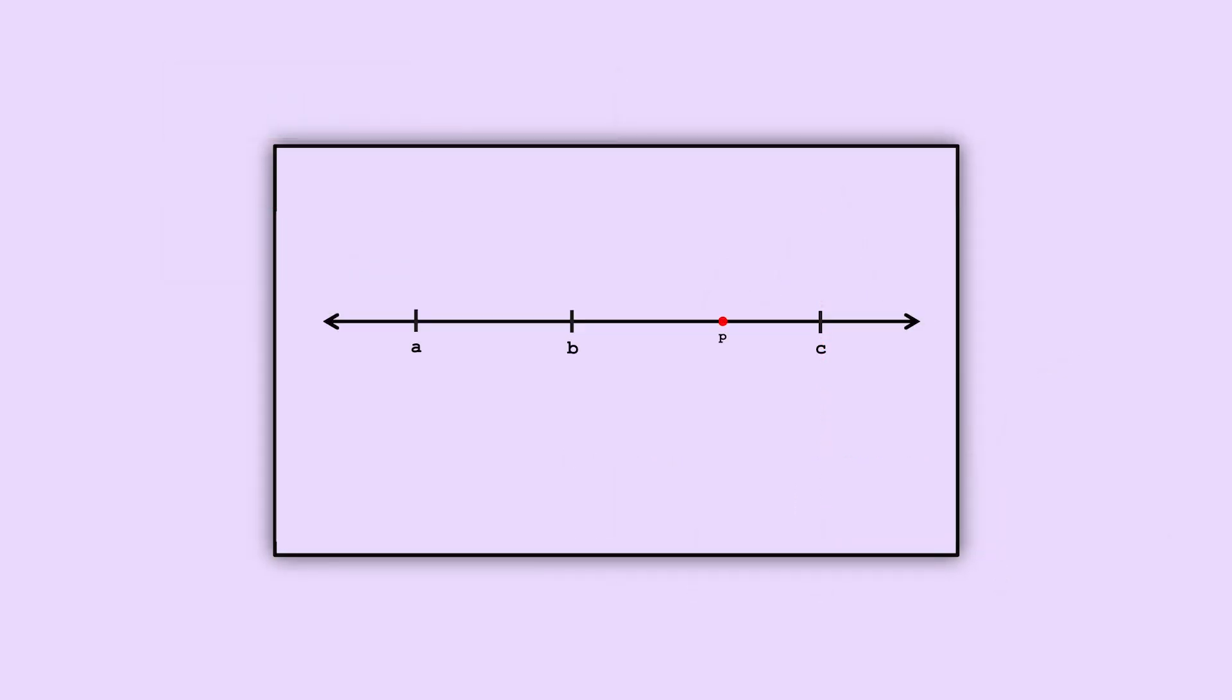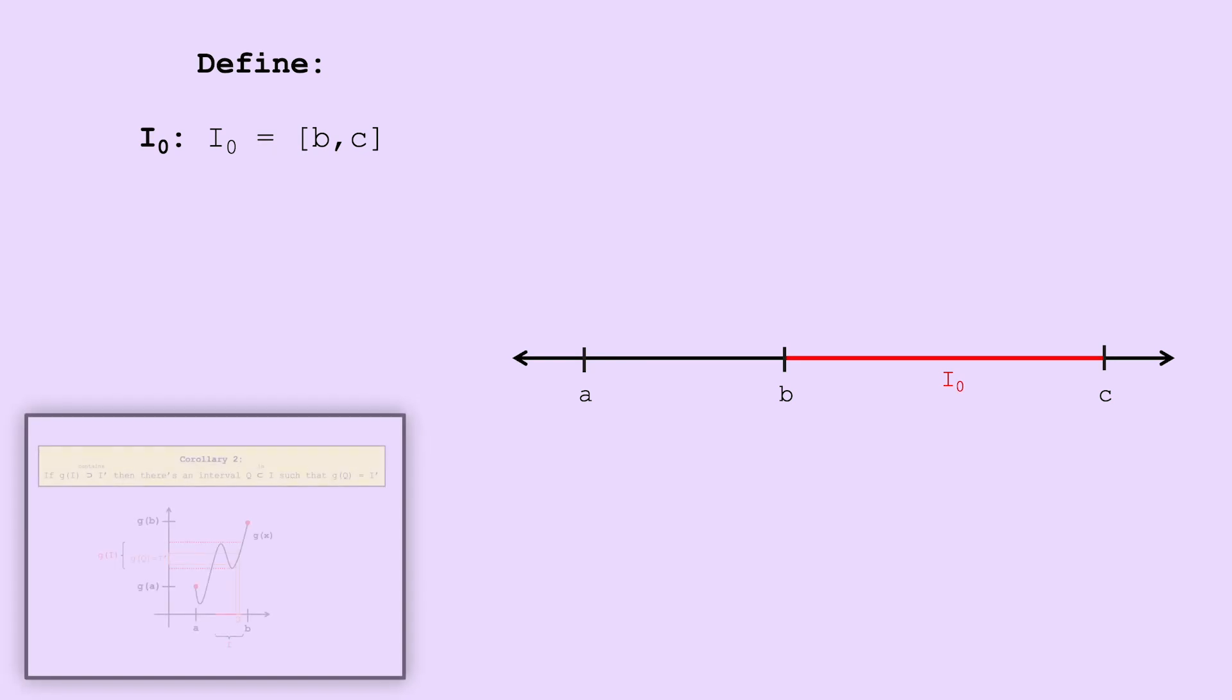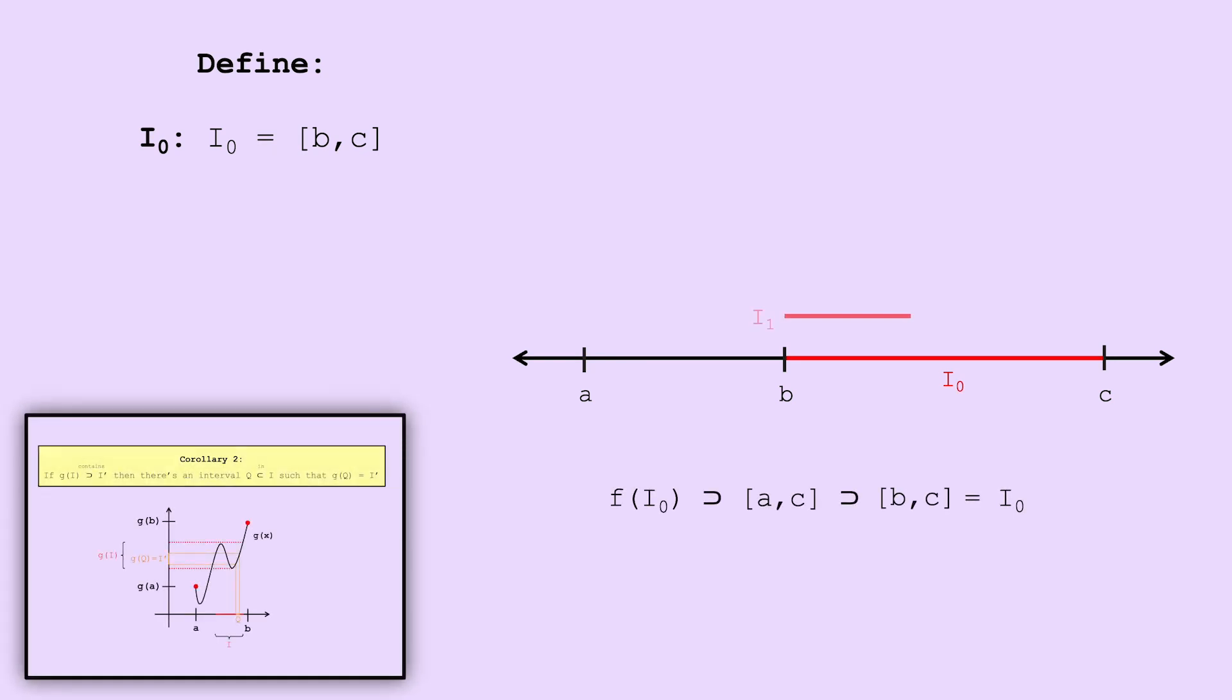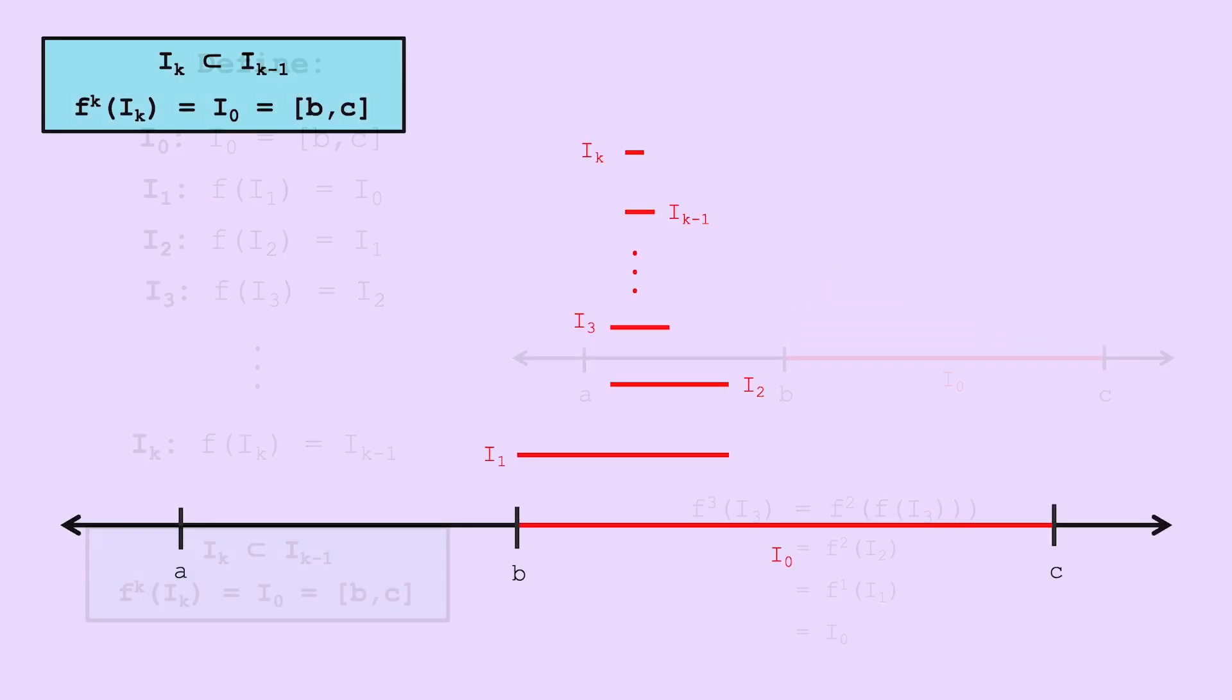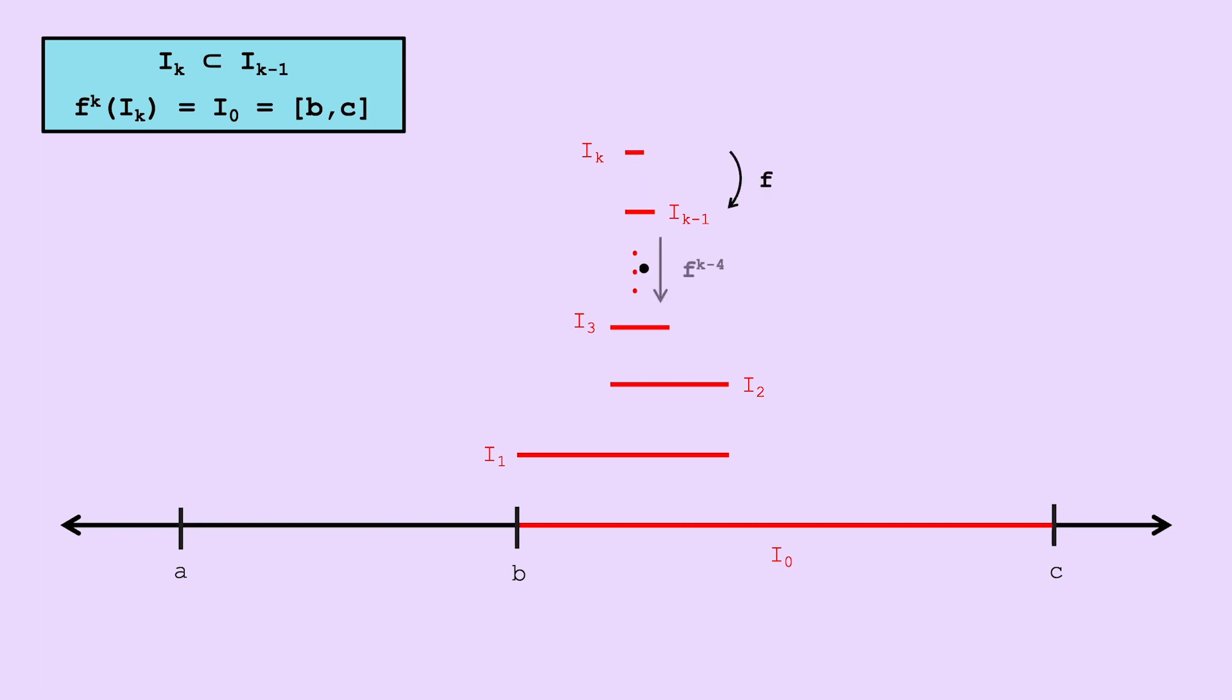Remember that we're going to show there's some point p in the interval bc, that essentially bounces around bc for as long as we want. We'll let our i0 be the interval bc. By the second corollary, because f of i0 contains itself, there's some interval i1 in i0, such that f of i1 is equal to i0. And again, i1 is in i0, so f of i1 contains i1. So there's an interval i2 in i1, such that f of i2 is equal to i1. Then there's an interval i3 in i2, such that f of i3 is equal to i2. And so on, where f of ik is equal to i of k minus 1. In this way, we've constructed a sequence such that ik is a part of i k minus 1, and iterating f, k times ik becomes i0. For example, f to the power of 3 of i3 is equal to i0. Notice how this means if you pick any point in the interval ik, it will stay in bc as you iterate f.